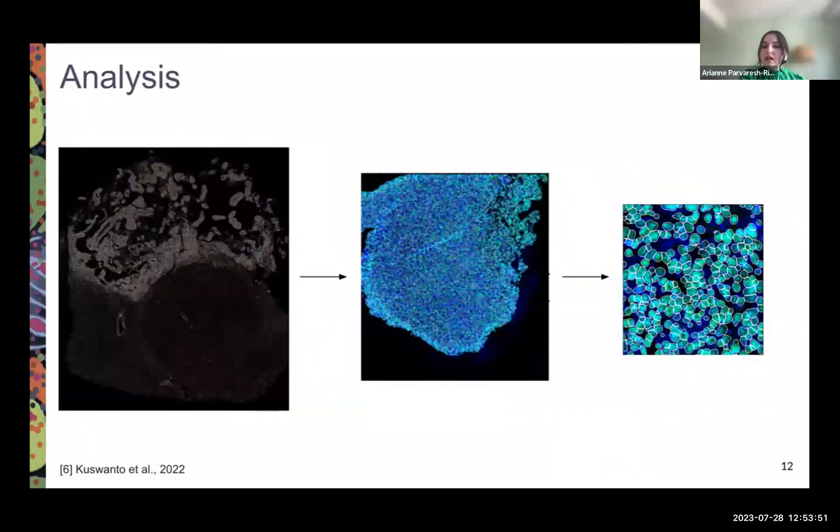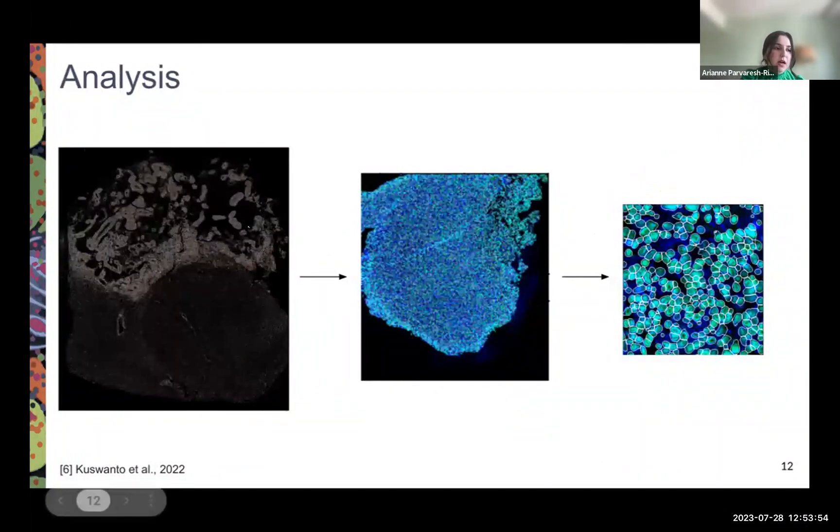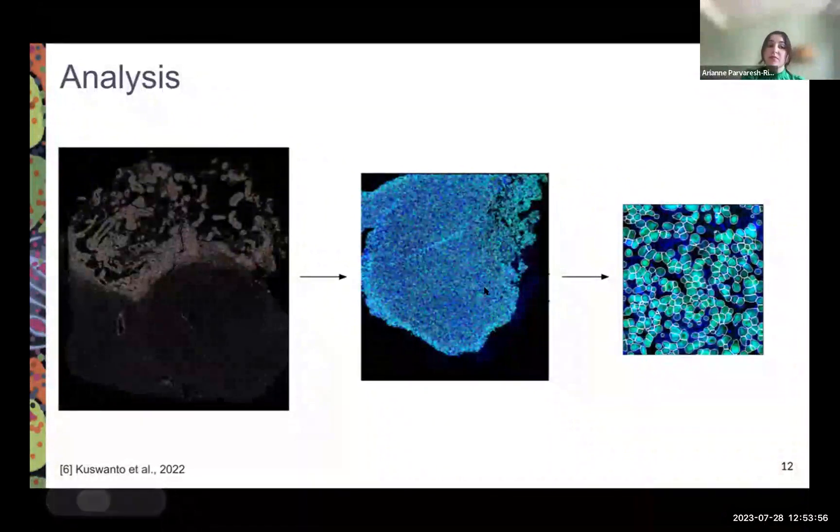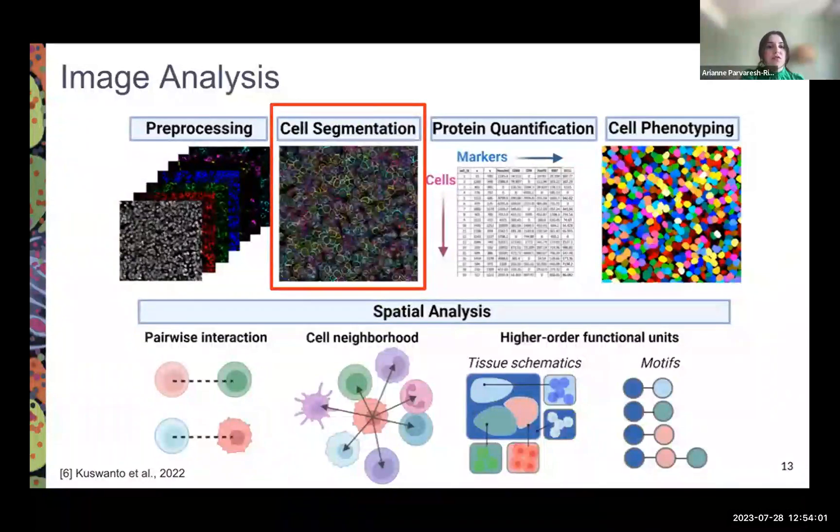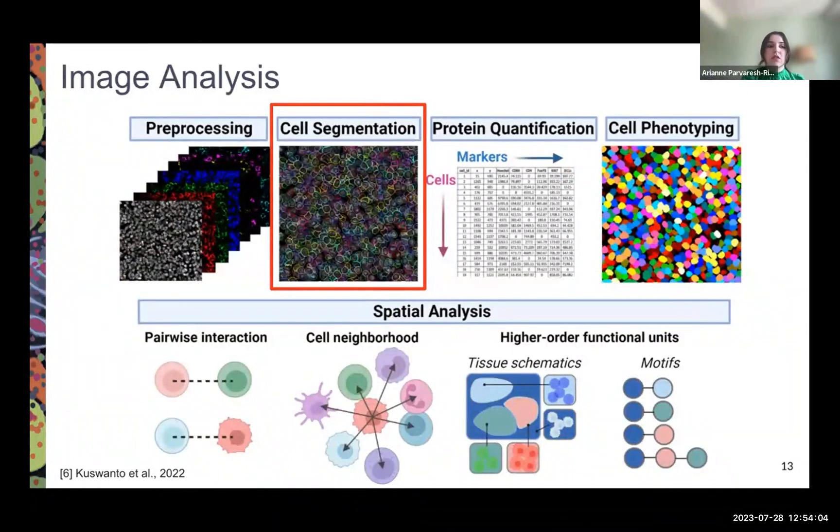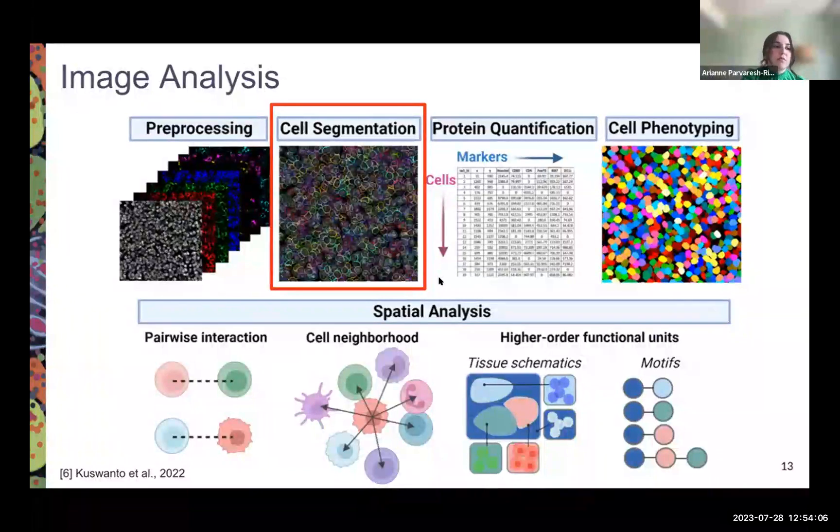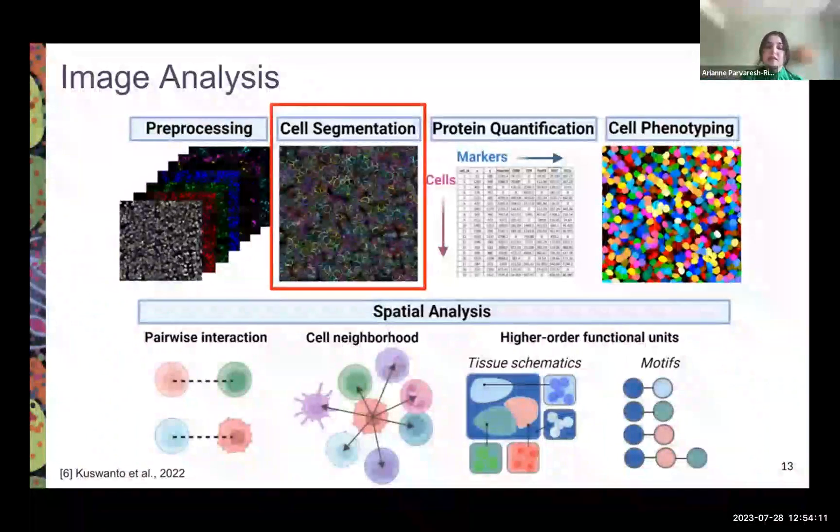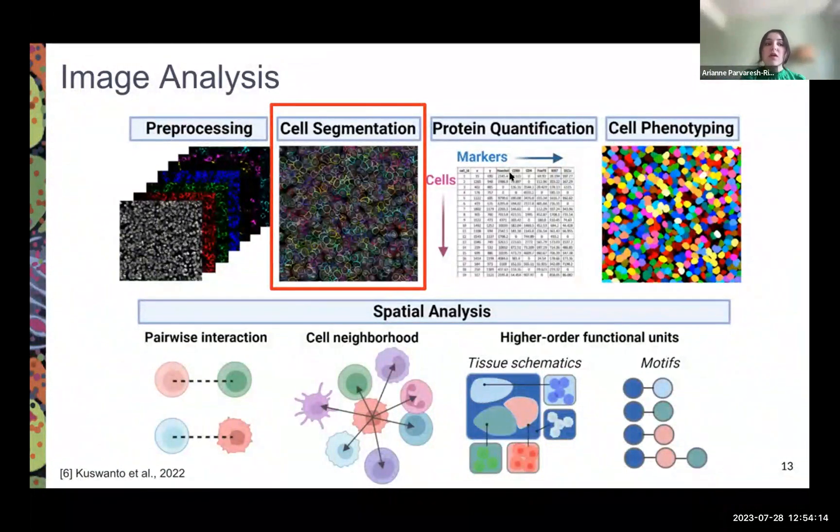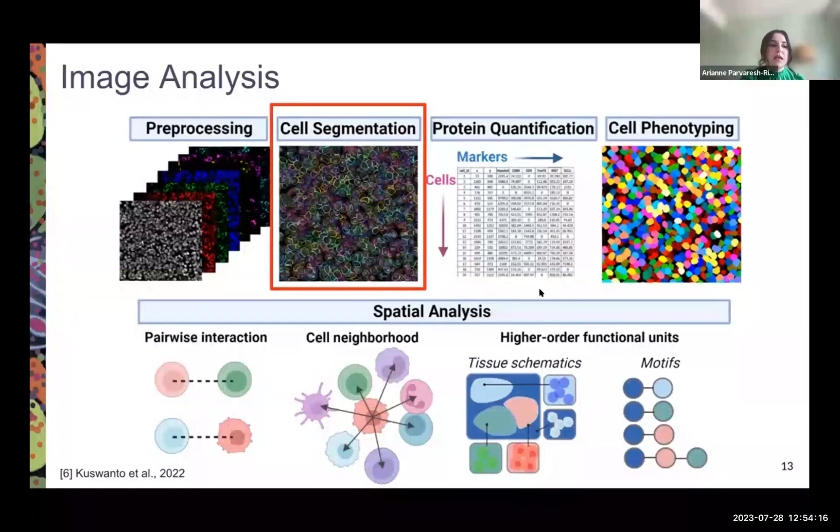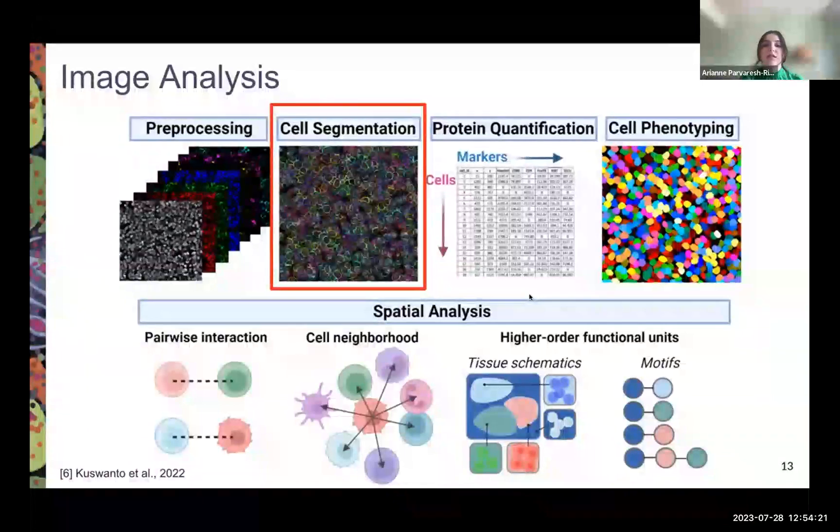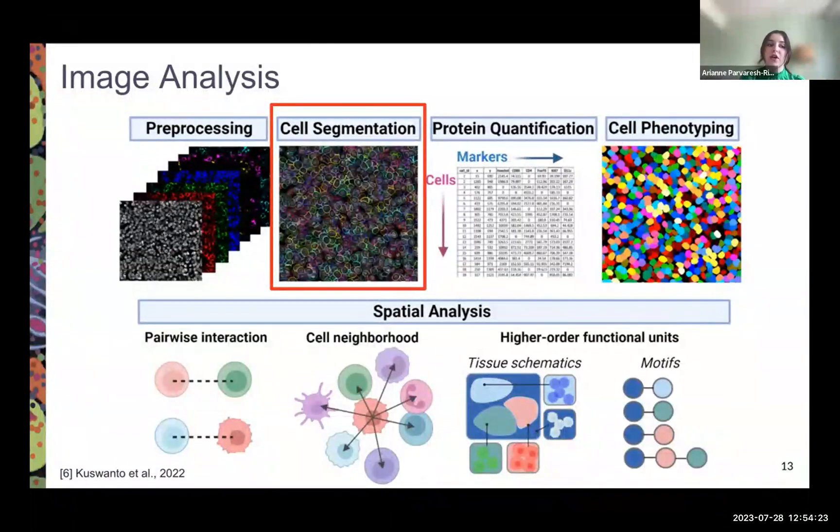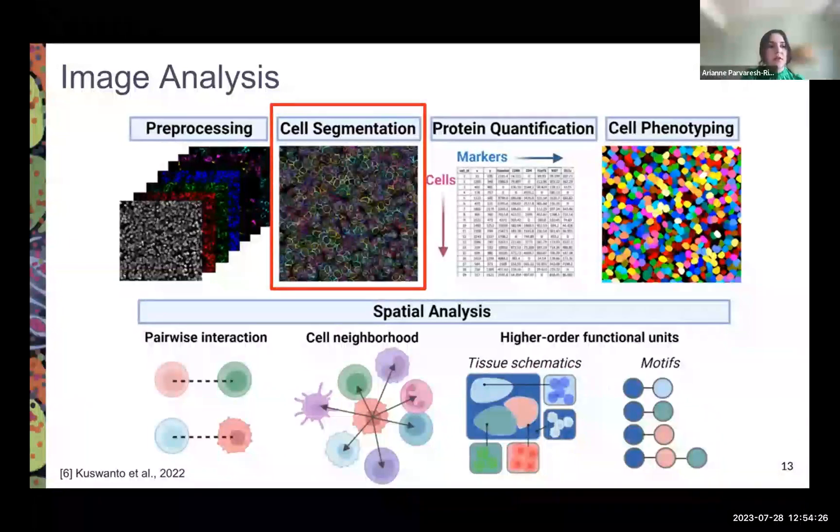When it comes to analysis, after the image is created, we have a pre-processed image which later has to be processed and go through multiple steps for further analysis. The common steps in image analysis involve pre-processing, which is when we process the images. The next step would be cell segmentation where we segment the cells, and later on, downstream analysis, protein quantification, cell phenotyping, and lastly, statistical spatial analysis to understand the cellular neighborhood, the interactions, and the environment and higher-order functional units of the tumor microenvironment.